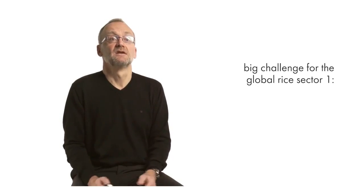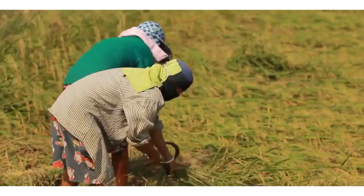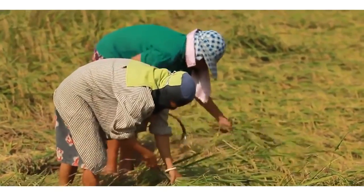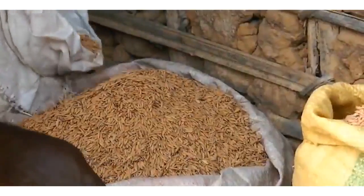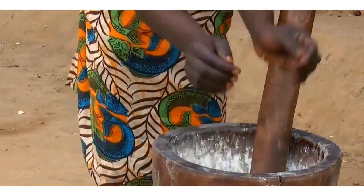The big challenges for the global rice sector in the future are four. The first is that we have to produce more rice. Due to population growth, urbanization and shifting consumption, we need to produce 60 million tons more milled rice annually by 2030 — about 12.5% more than current rates — and 20% more by 2040. To get there, we need to revitalize annual yield growth, which in recent decades has been only about 1% or less globally. We need to bring this back to 1.2 to 1.5% per year, and even more so in Africa, where rice demand is rising fast.